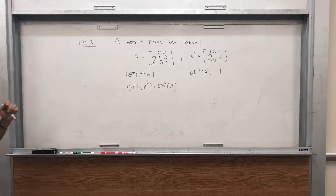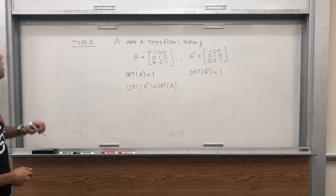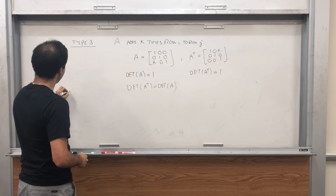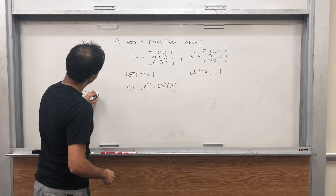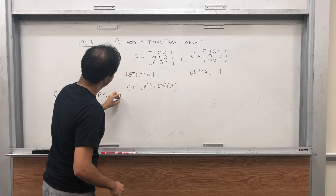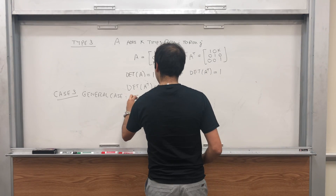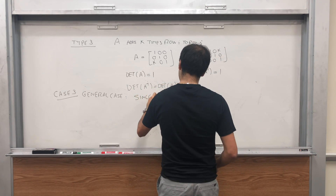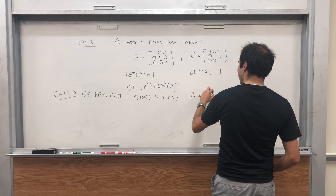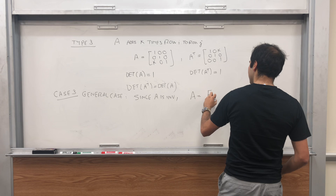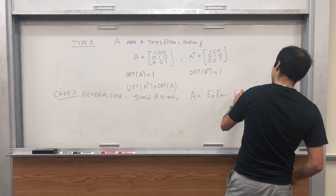For all three types, we've verified that the determinant of A transpose equals the determinant of A. Now we can move on to the general case. Here is where we need the fact that A is invertible. Since A is invertible, we know that A is a product of elementary matrices: E_m, E_{m-1}, ..., E_2, E_1.